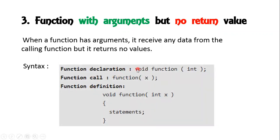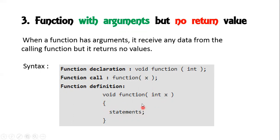The function declaration is void, so it is a void function. At input time, you are passing arguments in the function call — x is the actual argument here. In the function definition, the function name is void, and these are called formal arguments. The actual argument x is copied to the formal argument integer x. Based on the arguments, we design and execute the statements in the function.